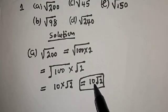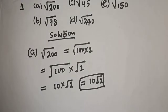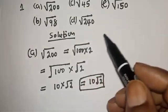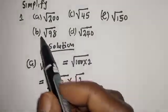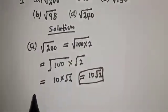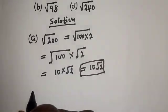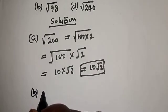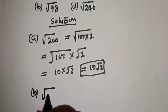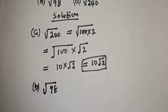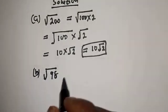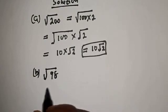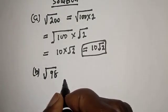This gives us 10 root 2. This is the answer for square root of 200 — we have simplified it to 10 root 2. Let's consider example (b): square root of 98.